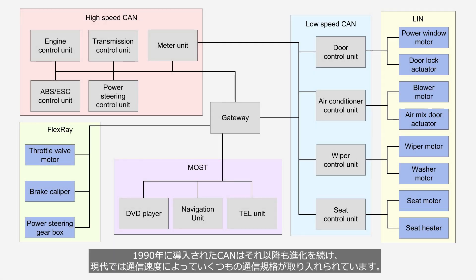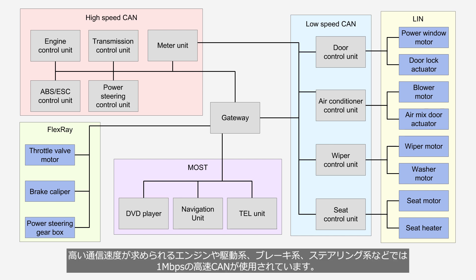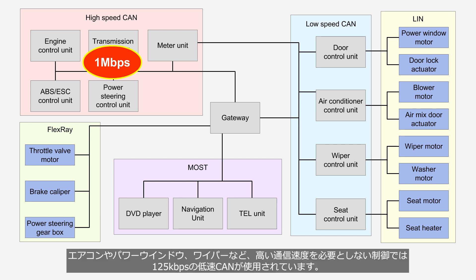CAN, introduced in 1990, has continued to evolve, and in modern times multiple communication standards have been adopted based on communication speeds. In components such as engine, drivetrain, brake, and steering where high communication speed is required, a high-speed CAN with a speed of 1 Mbps is employed. In controls such as air conditioning, power windows, and wipers which do not require high communication speed, a low-speed CAN with a speed of 125 Kbps is employed.